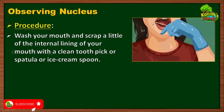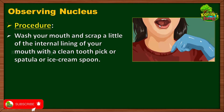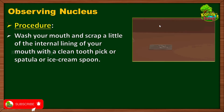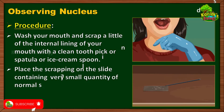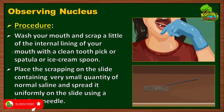Slowly scrape the inner side of the cheek so that the cells present on the inner side get transferred to the tip of the toothpick. Then the toothpick should be placed in a drop of water on the slide. After collecting the scraping from the cheek, place the scrapings on the slide containing a very small quantity of normal saline.